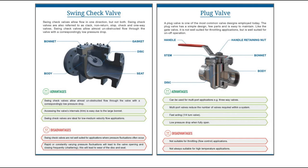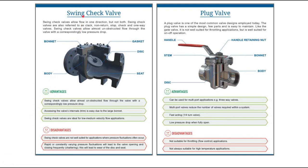Disadvantages of swing check valves: they are not well suited for applications where pressure fluctuations often occur. Rapidly or constantly varying pressure fluctuations will cause the valve to open and close frequently — a situation called chattering — which leads to wear of the disc and seat. So we do not recommend using a swing check valve in pressure-fluctuating situations to avoid damaging the internal components.